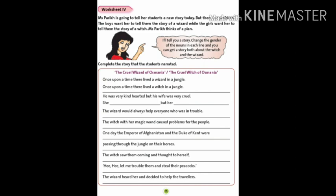Now, read the given statements and complete the story. First sentence is, once upon a time, there lived a wizard in a jungle. And the modified sentence is, once upon a time, there lived a witch in a jungle. This was an example. Now, you have to complete the story by your own.